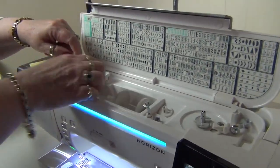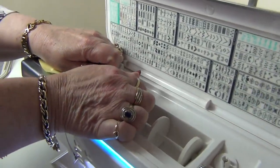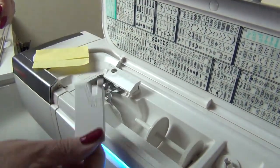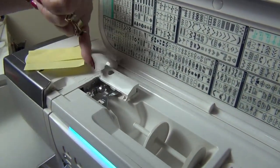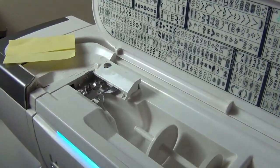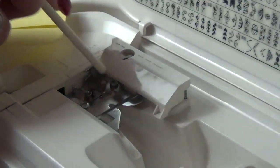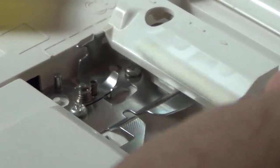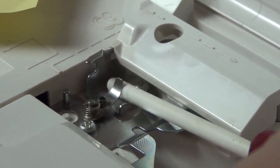Now when you take it off, there's a little clip right here, and when you thread your machine, the thread goes under this clip. That's part of the tension holding the thread in place.